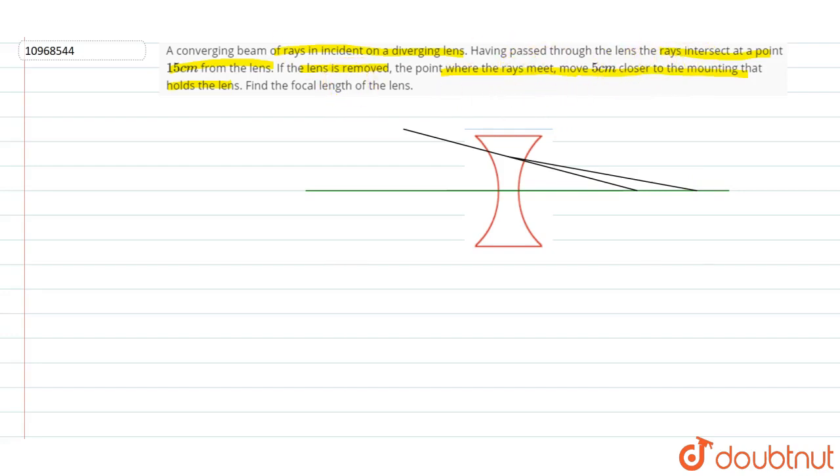Having passed through the lens, the rays intersect at a point 15 cm from the lens. This distance is given in question. That is 15 cm. From here to here. That is 15 cm. And this is shown that if the lens is removed from the point where the rays meet, move 5 cm closer to the mounting that holds the lens. 5 cm is this distance.